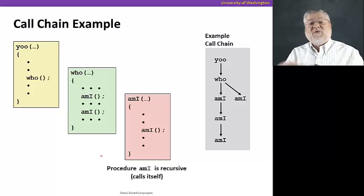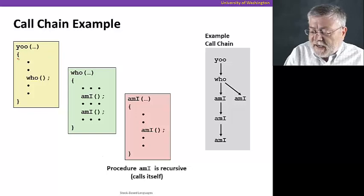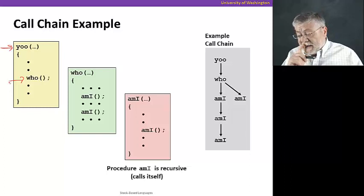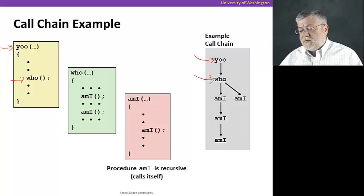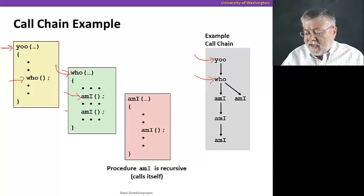So let's take a look at an example of a call chain, a string of procedure calls. All right, so here we have some funny functions. The function u, which calls the function who. And we can see in the call chain that we've somehow started with the function, the procedure u, and it then calls who. Now, the procedure who, in its turn, calls mi twice.